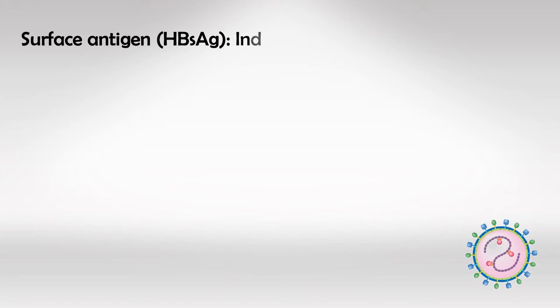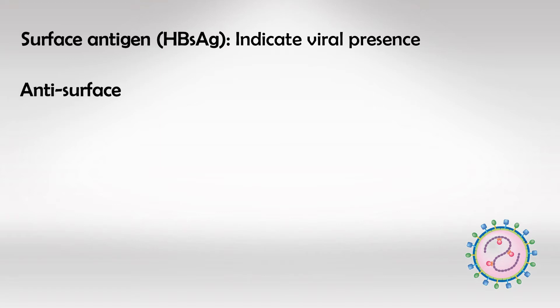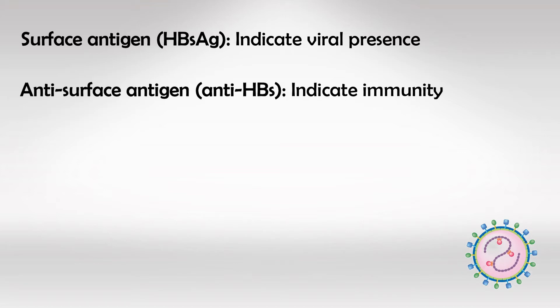The first is the surface antigen. If a blood sample has the surface antigen it means that this blood sample does have the virus. The anti-surface antigen is basically an antibody against the surface antigen and it indicates immunity. So if somebody has anti-HBs in their blood, they are immune to hepatitis B virus.